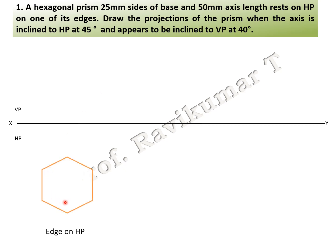This is how you construct the edge condition. If looking from the top of the object, this is how it is visible. Edge condition means the prism is towards your right-hand side. Since it has six sides: top face A, B, C, D, E, F are visible, so they are written without brackets. Bottom face A1, B1, C1, D1, E1, F1 are not visible, so they are written in brackets.